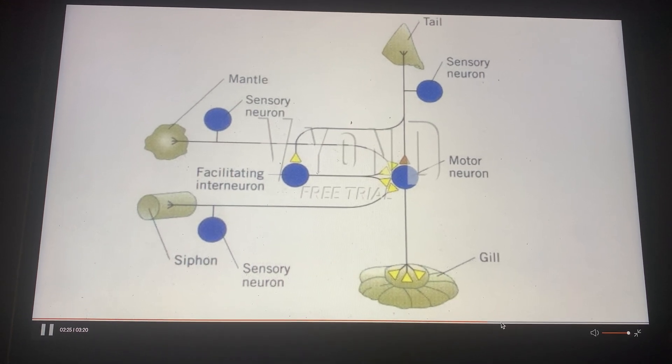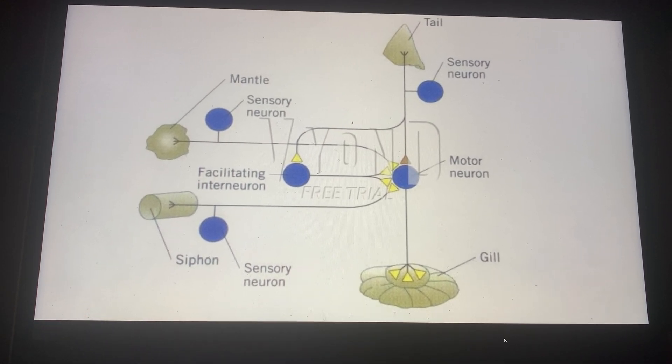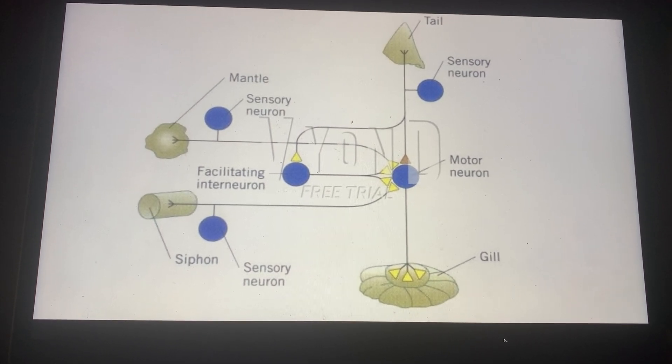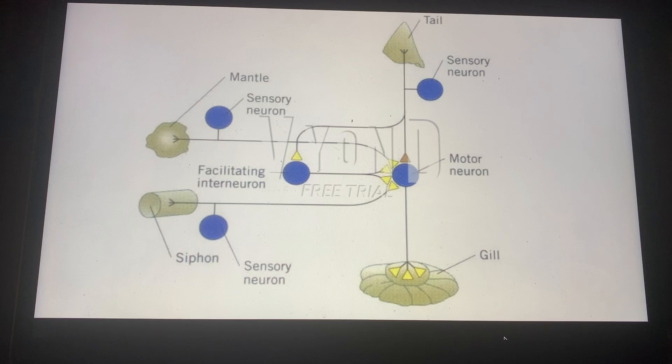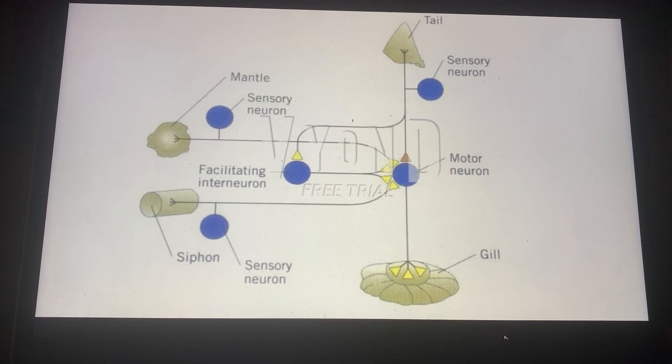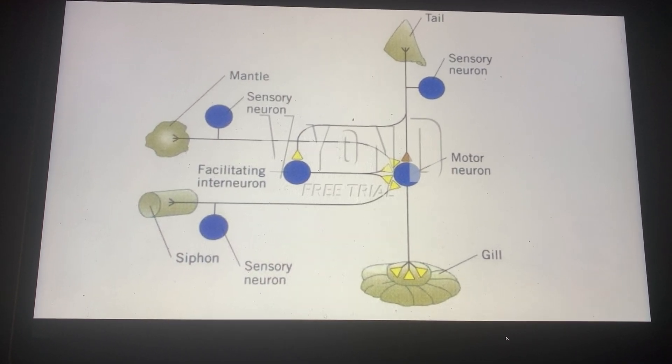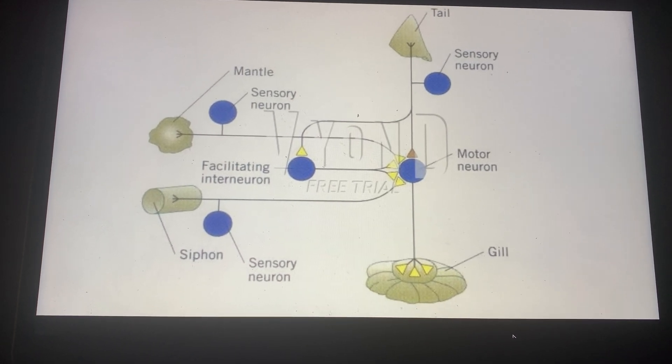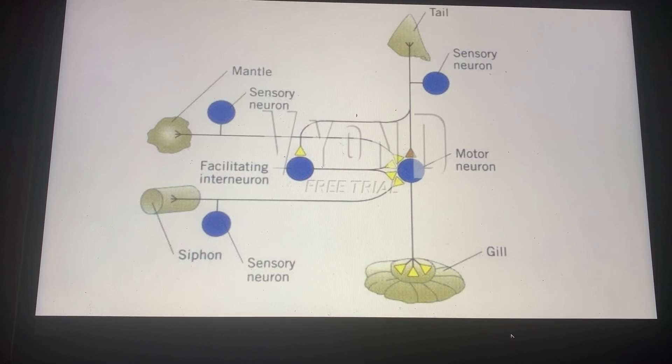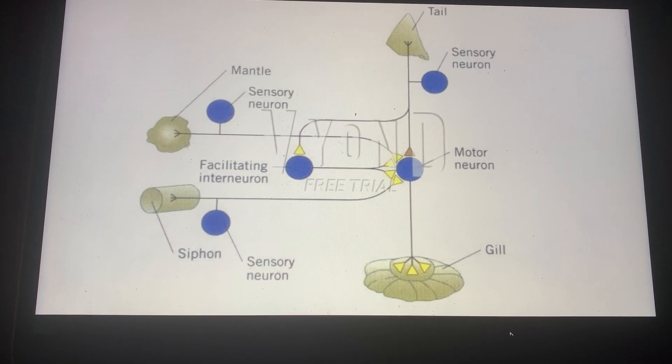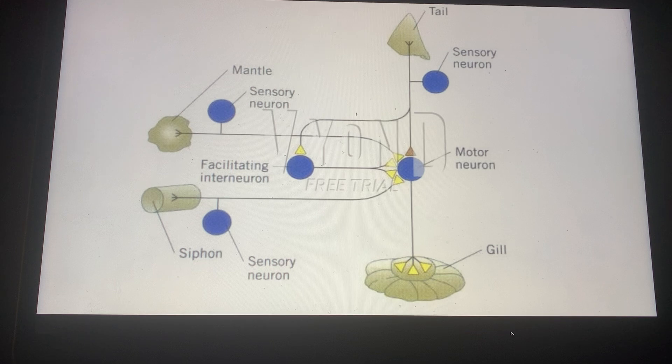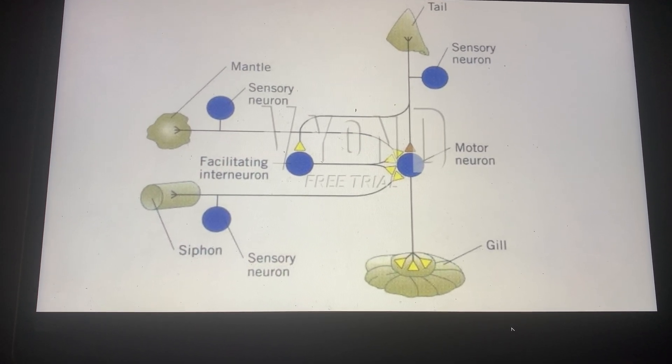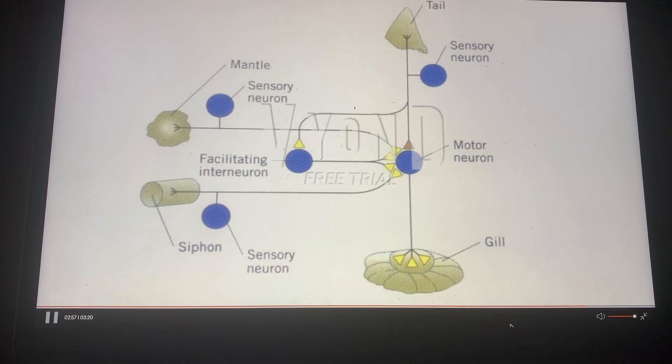So when this happens, over time, the siphon touch will be associated with the electrical stimulus of the tail shock. This could lead to a strong gill withdrawal with even the slightest touch that isn't an aversive stimulus. This allows the Aplysia to learn that a non-aversive touch of the siphon or mantle, even when not paired with the shock, will over time lead to an aversive response.